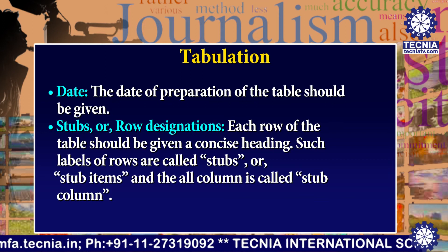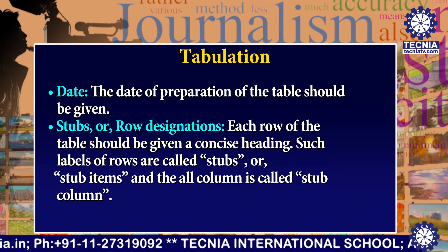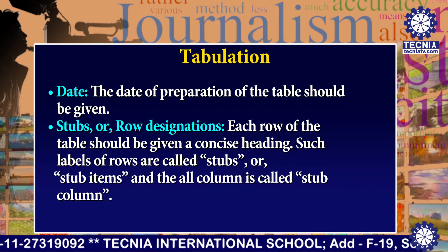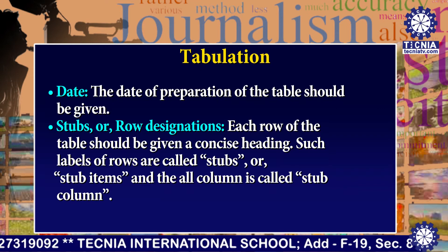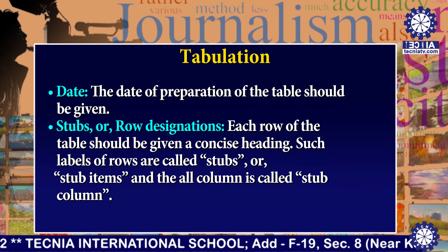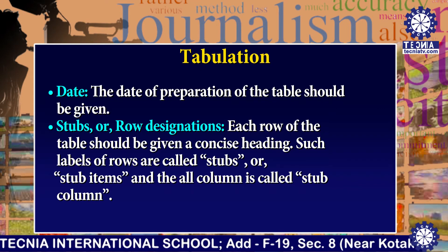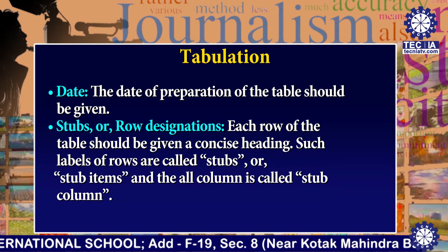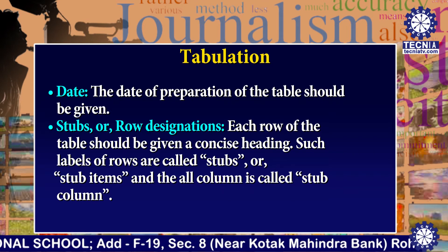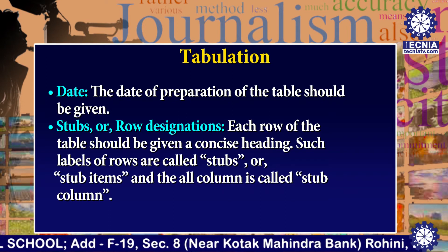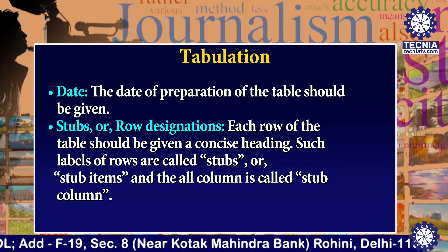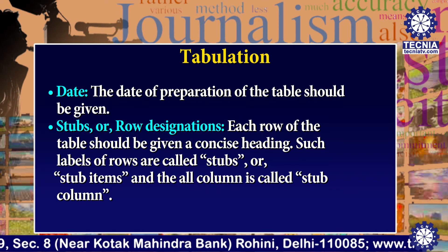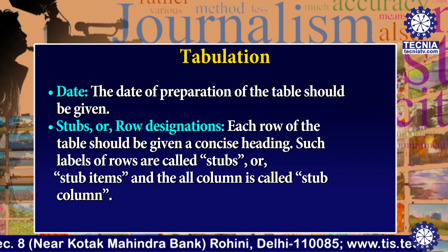Next is the date — the date of preparation of the table should be given. Next are the stubs or row designations. Each row of the table should be given a concise heading. Such labels of rows are called stubs or stub items, and the first column is called the stub column.